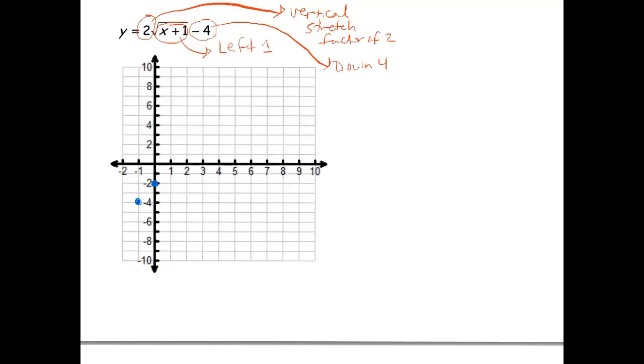Next step. Let's take the point we had at 4, 2. Left one. Let's stretch this by a factor of 2. So our y value is 2. Getting multiplied by 2 brings us to 4. And down 4 brings us to 3, 0. So I think that's enough for us to draw our graph right here.